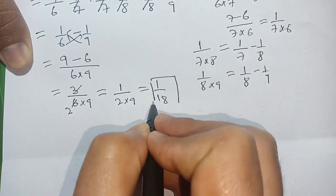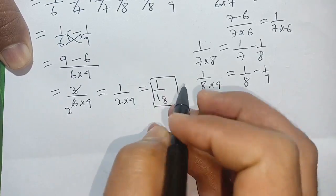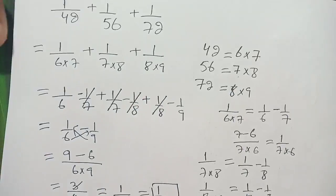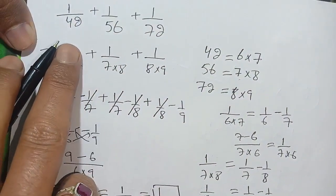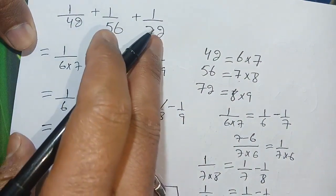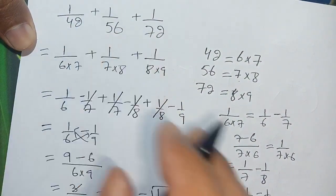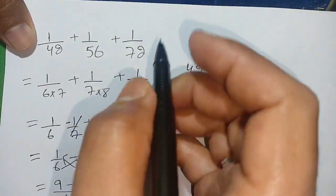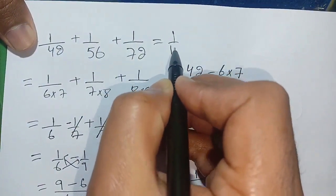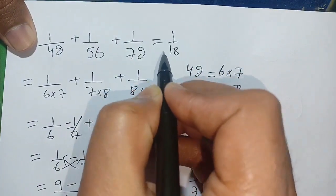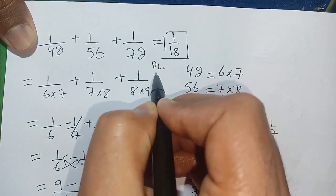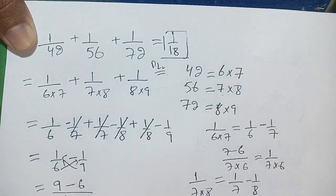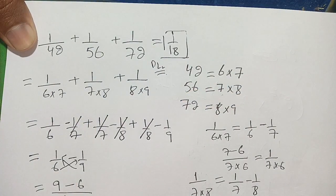Thus it is equal to 1 divided by 9 times 2, which becomes 1 divided by 18. This is our required value: 1 divided by 42 plus 1 divided by 56 plus 1 divided by 72 is equal to 1 divided by 18. That is today's problem. If you are new here, make sure to subscribe to our channel for more informative videos. See you in the next video — till then, bye!